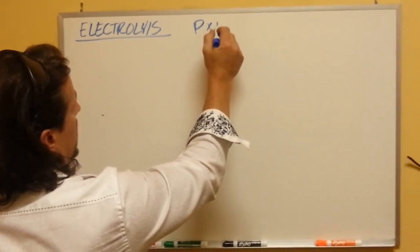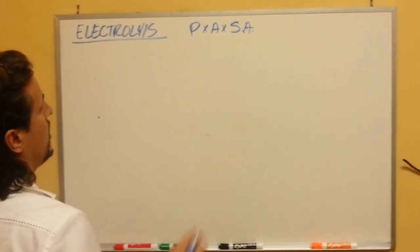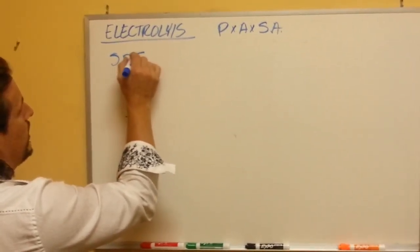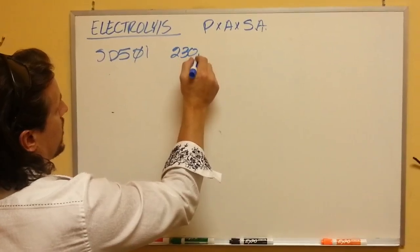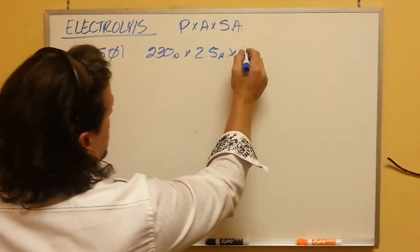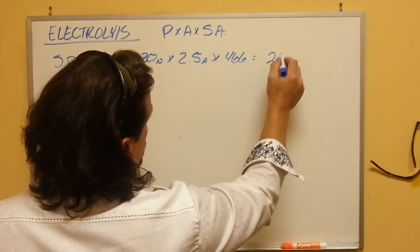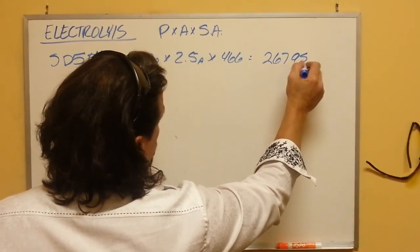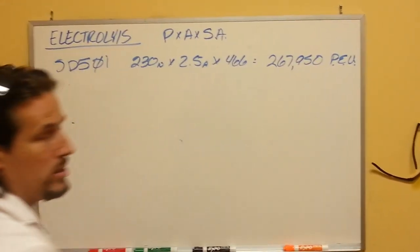It's a question of power times the amperage times the surface area of the plates. So, for instance, the SD501, which is what we used for Schuyler, has 230 watts, it has 2.5 amps, and it has 466 square inches of plate space, which gives you a number of 267,950 potential electrolysis units.